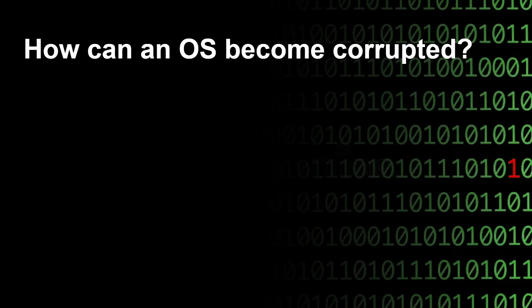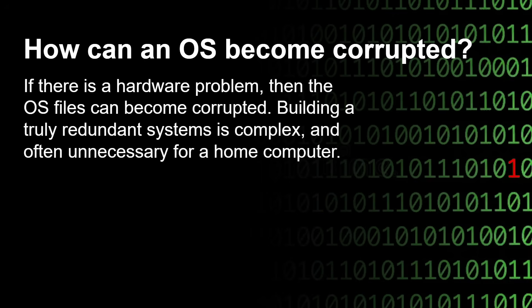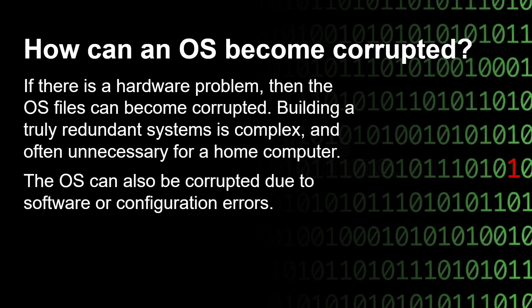How can the OS on internal storage become corrupted? If there's a hardware problem — something physically wrong with a device, a controller, a cable — files can become corrupted. Building a truly redundant system, even for boot, is quite complex and really isn't necessary for a home computer. The OS can also become corrupted due to software errors or configuration errors: something in the software causes a file to be deleted, or you try to change your configuration and that messes it up.